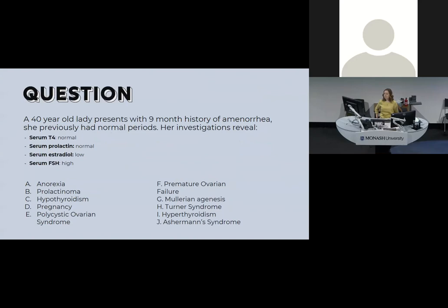A 40-year-old lady presents with nine months of amenorrhea, previously normal periods. Investigations show normal T4 and prolactin, but low estradiol and high FSH. This is a presentation of premature ovarian failure — the high FSH is coming down from the pituitary but the ovaries aren't producing estradiol, indicating the problem is at the level of the ovary. Note: premature ovarian failure is defined as occurring before age 45.